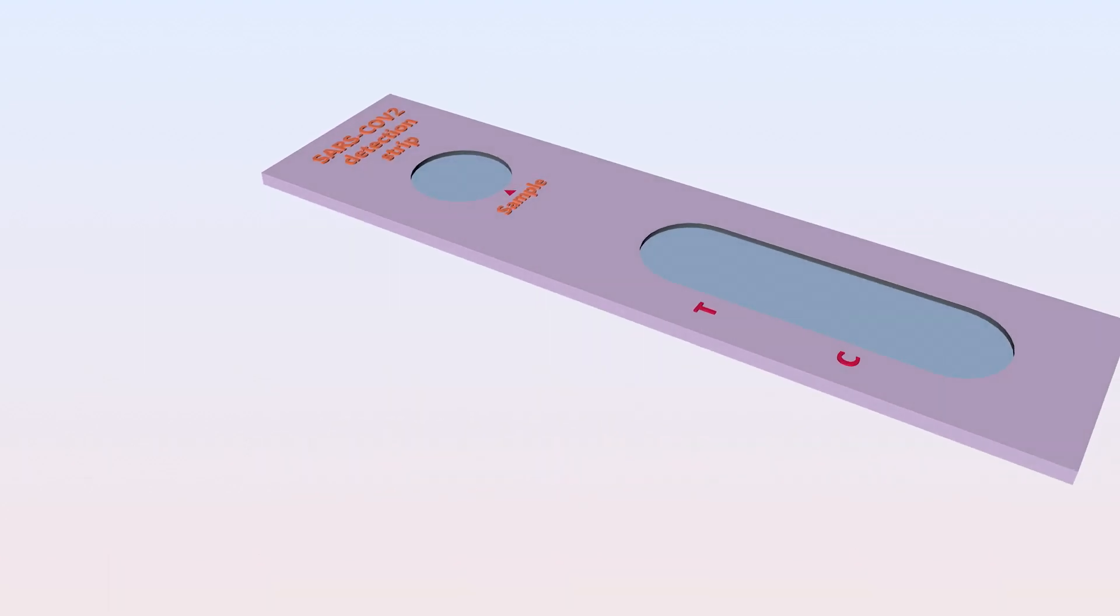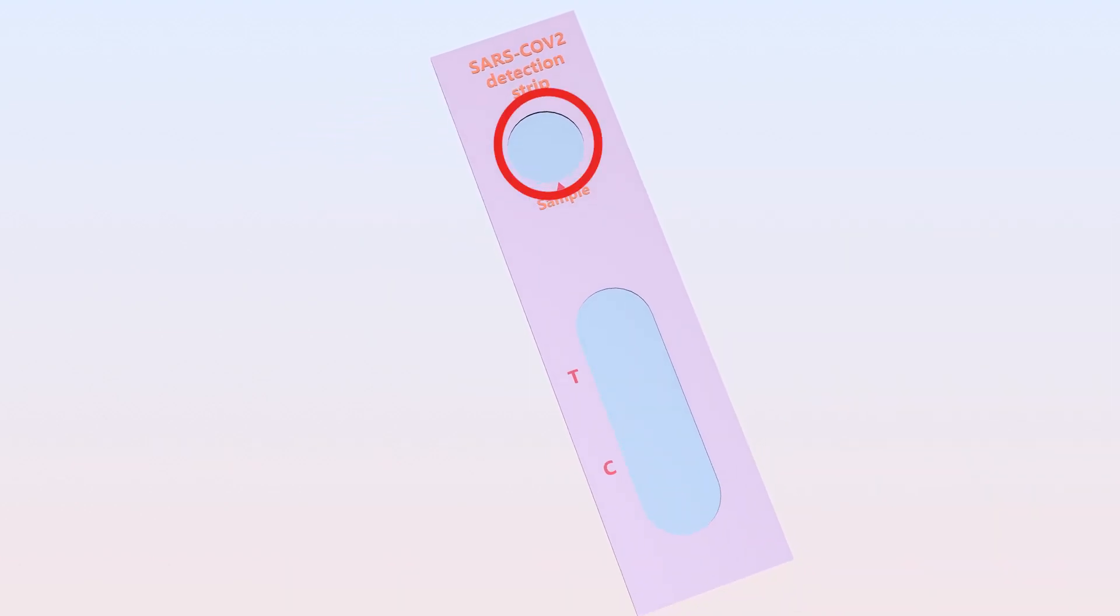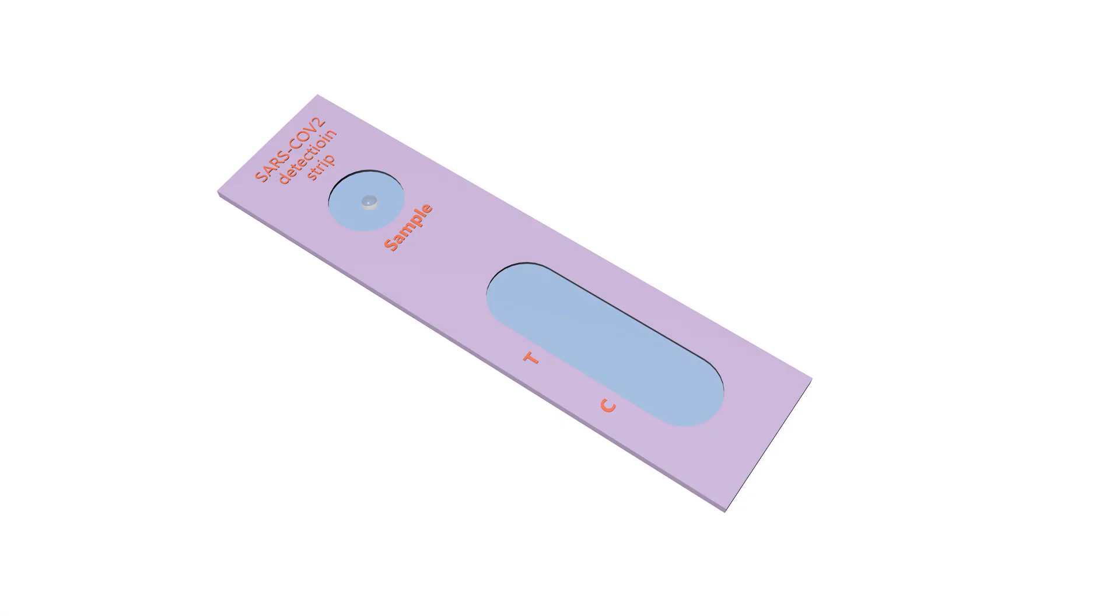This is a colloidal gold-based immunochromatographic test strip. You can see a sample loading area, which allows samples from pharyngeal swabs, nasal swabs, and alveolar lavage fluids to be loaded on the strip. You can also see the testing area marked with the letters T and C. T stands for test, and C stands for control.